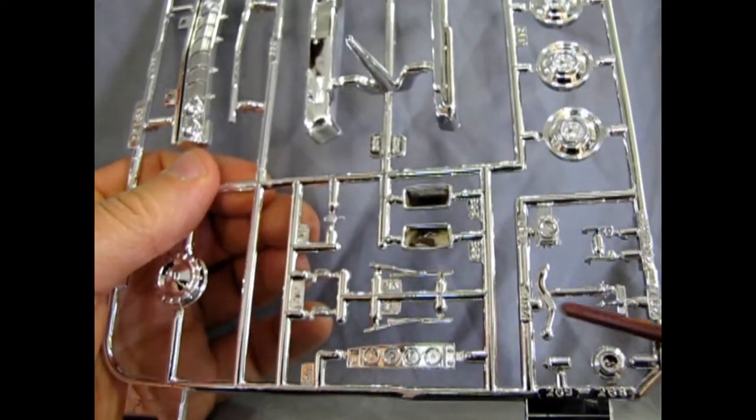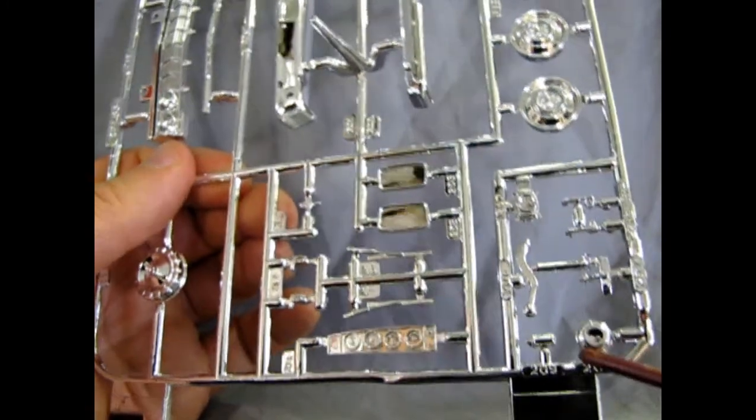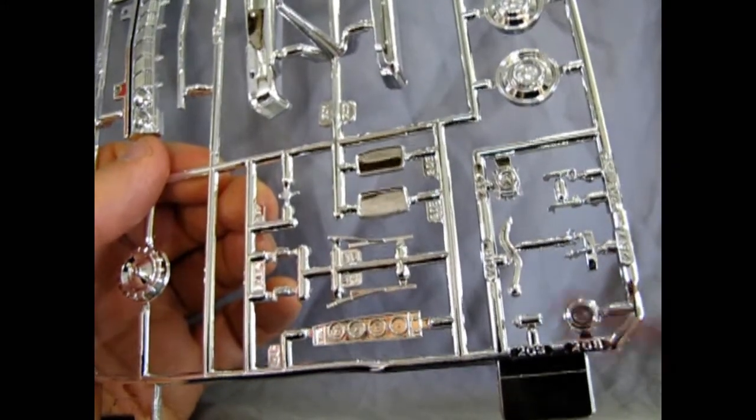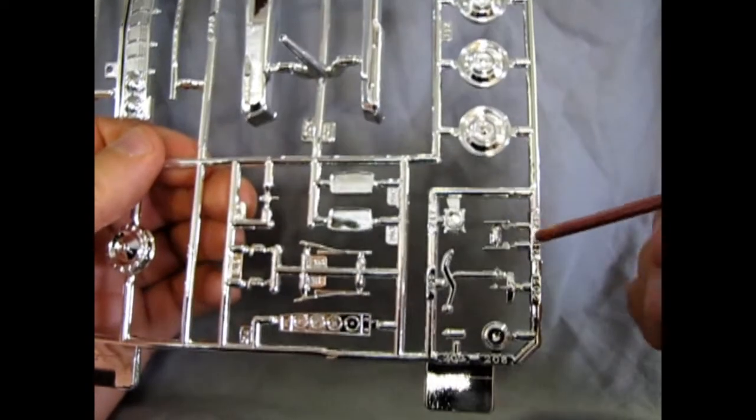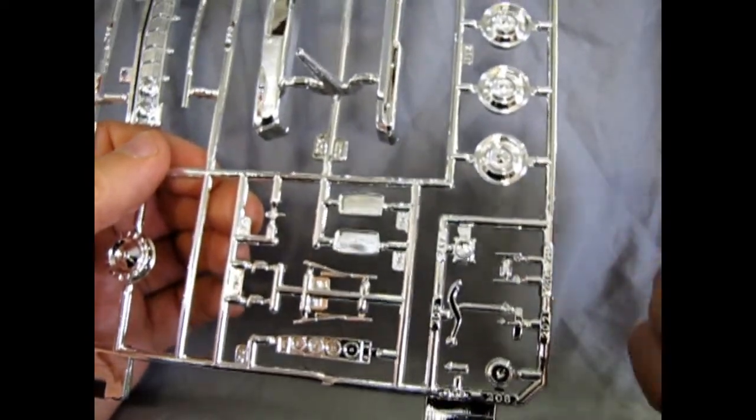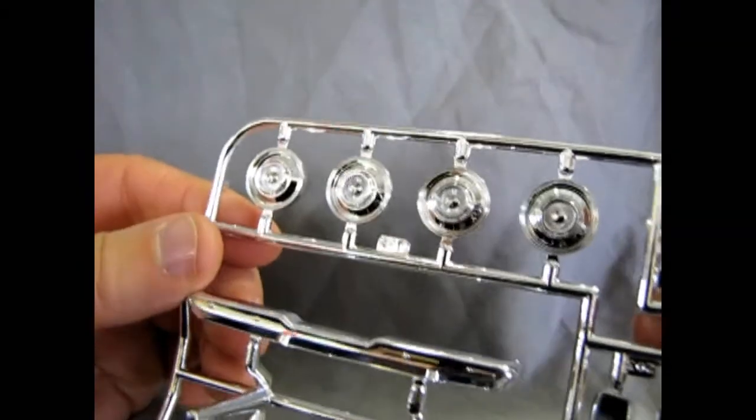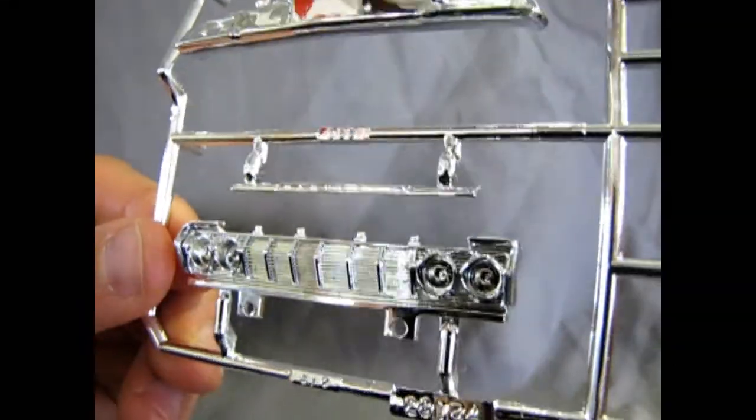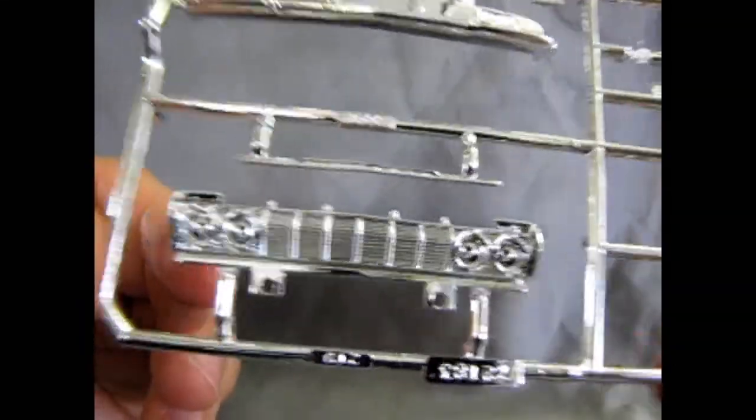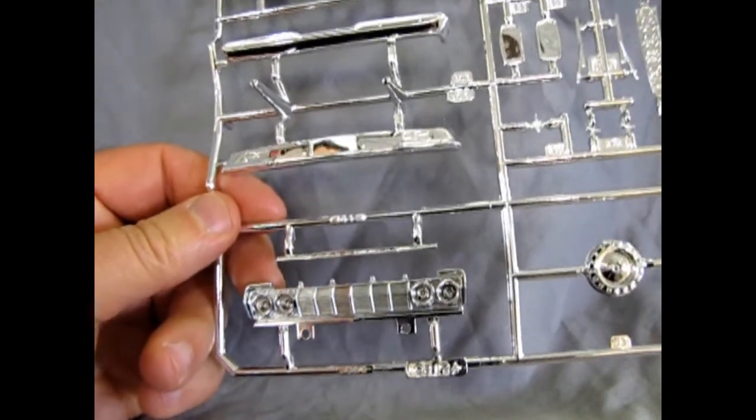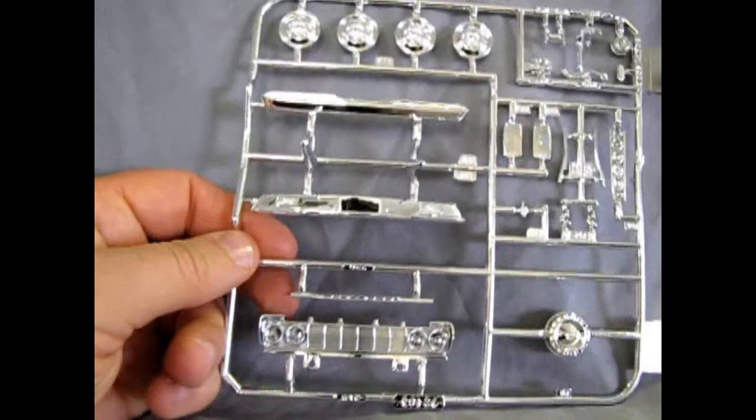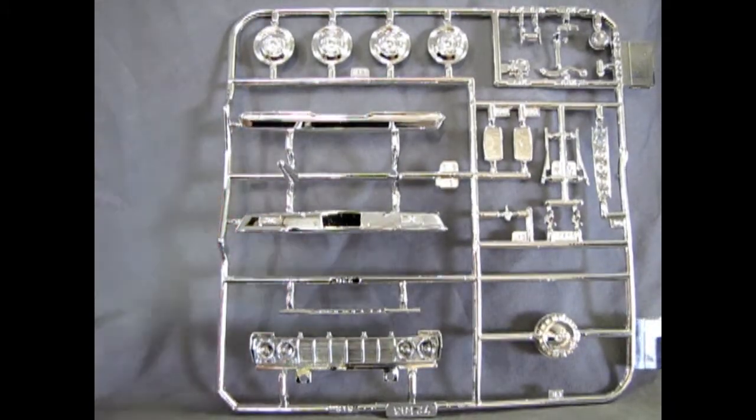And then we've got these nice chrome pieces there. The carburetor, the gearshift lever, the alternator. And then the door latches there. So again, some very nice detail on here. And the front grille is very reminiscent of the Johan front bumper for the 64 Plymouth that I had. I had a Richard Petty one from Johan.